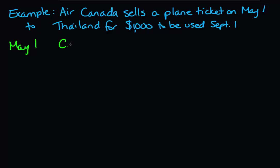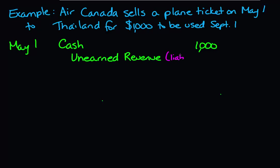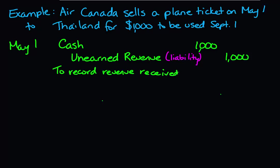Air Canada is receiving cash of $1,000, but it hasn't provided the service to the customer yet, so it can't record the revenue. It's going to record cash received and it's going to record unearned revenue. I'm putting a liability in pink — that's not part of the account name, but just as a reminder, this is a liability account. Our description: to record revenue received in advance. Our liability account has a credit balance of $1,000.